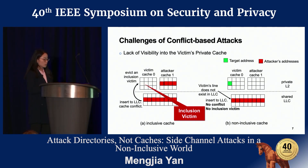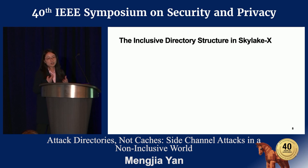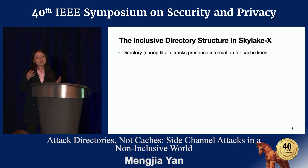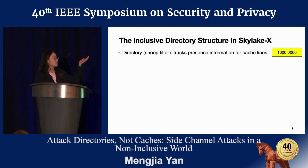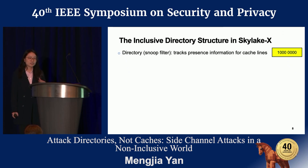But we make it work — by not exploiting cache conflicts, but by exploiting conflicts on the directory structure. This directory is not the software directory in the operating system; it's a hardware structure, also called the snoop filter. It's used to track the presence information for all cache lines in the cache hierarchy. A very classical format is a bit vector: given eight cores, a directory entry has a bit vector of length eight, where each bit indicates whether the corresponding core's private cache holds a copy of the line.